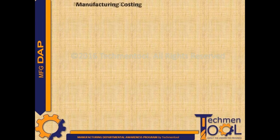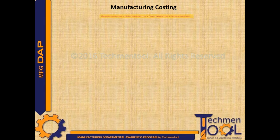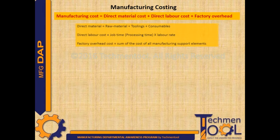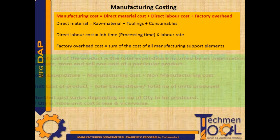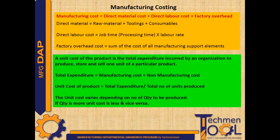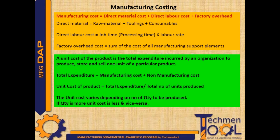This is the calculation method of different elements of manufacturing cost. The unit cost of a product is the total expenditure incurred by an organization to produce, store, and sell one unit of a particular product. Total expenditure or cost of the product is the sum of manufacturing cost and non-manufacturing cost. If we divide total expenditure by number of units, we get the unit cost of the product. The unit cost varies depending on quantity to be produced — if quantity is more, unit cost is less, and vice versa.